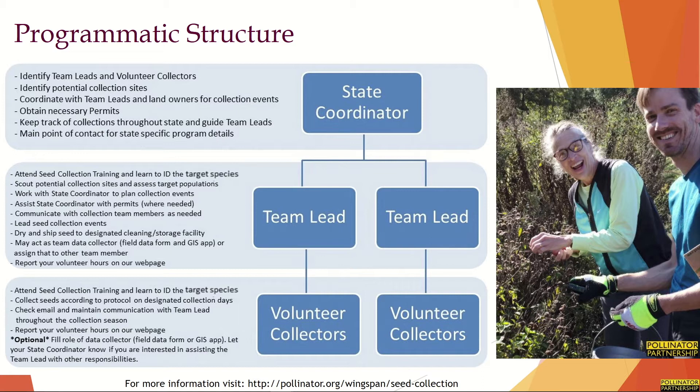Team leads are the local, on-the-ground volunteer leads throughout each state. State coordinators will set them up with a team and help them find a collection site if they don't already have one. From there, they will work with the state coordinator to obtain any necessary permits, familiarize themselves with our 34 target species, scout the site to identify populations, and coordinate with their team to schedule and lead collection events. They may collect data and they oversee the drying and shipment of the seed to Mason State Nursery. Many teams have opted to have co-leads and divide the tasks, which has been very effective.